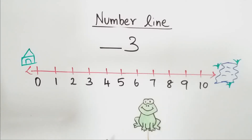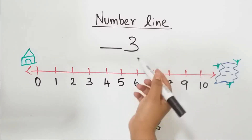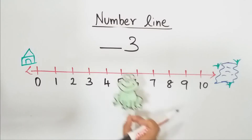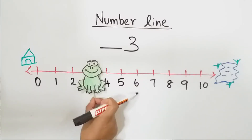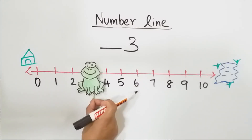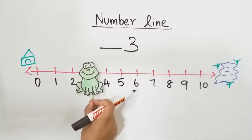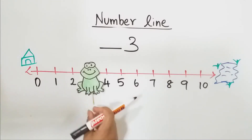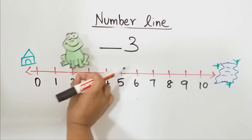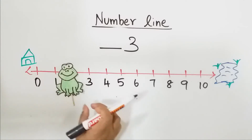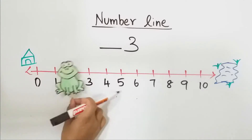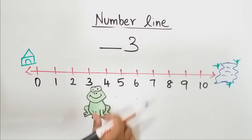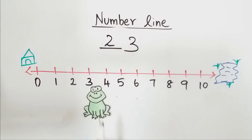Now can you tell me which is the before number of three? This froggy is here now. Before means we have to go backwards, so it has to jump backwards. Which is the before number of three? Two. Very good children, it is two.